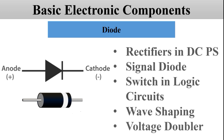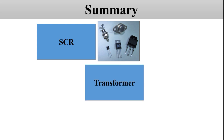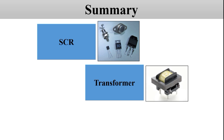Let's summarize what we have seen in this video. We have seen SCR — what it is, how it works, and its applications. Next, we have seen the transformer — how it works, which principle it operates on, and the different types of transformers. And lastly, we have seen the diode.